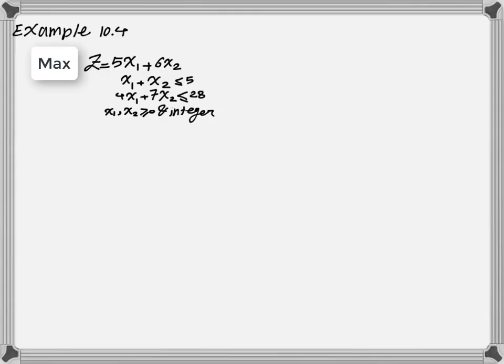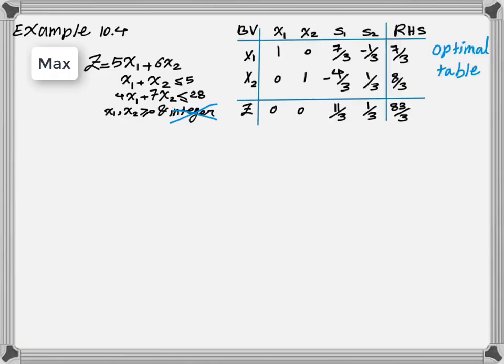So to get started, let's take a look at example 10.4. As I mentioned earlier, we first relax the assumption of integer variables and solve this problem using the regular simplex method. If we solve this problem using the simplex method, this is the optimal table that we reach. If you are not familiar with the simplex method, please go back and watch the video on how to solve a linear programming problem using the simplex method before moving on further.